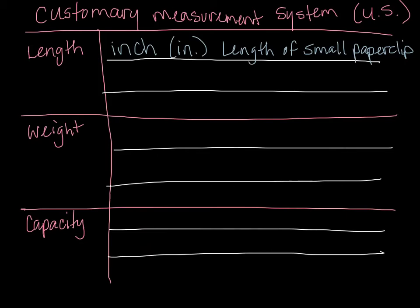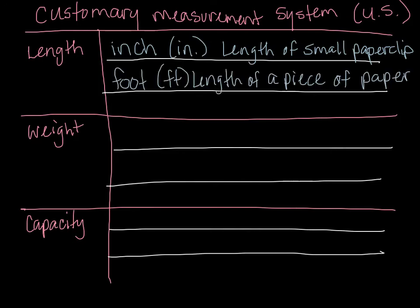Our first measurement is for length — how far, how long, how tall something is. One measurement we use is an inch, which is the length of a small paper clip. Some of you know it's around the length from your knuckle to the tip of your finger. The next measurement is a foot, which is like the length of a piece of paper — from top to bottom. There are 12 inches in a foot; you already know that.